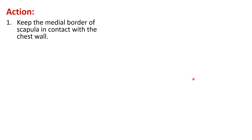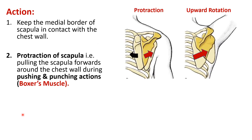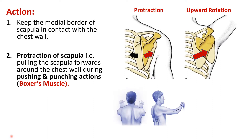The serratus anterior muscle has 3 actions. First, it keeps the medial border of the scapula in contact with the chest wall. Second, it is involved in protraction of the scapula — pulling the scapula forwards around the chest wall — which is done when a person performs pushing and punching actions. Because of this, the muscle is also known as the boxer's muscle.